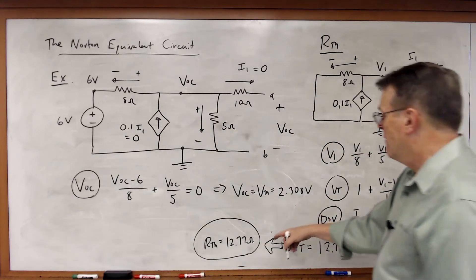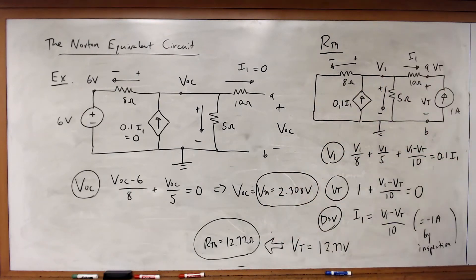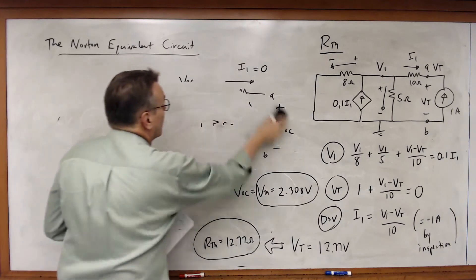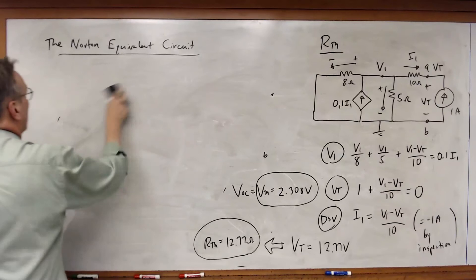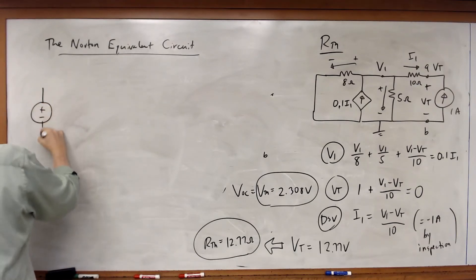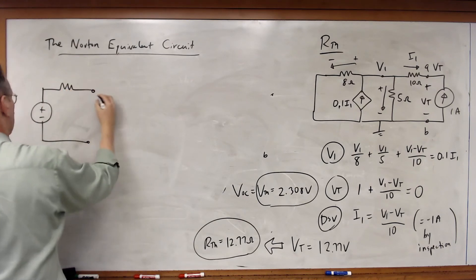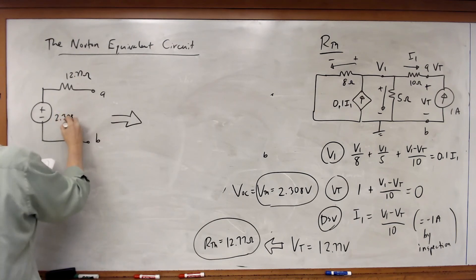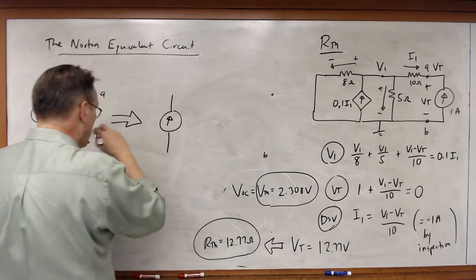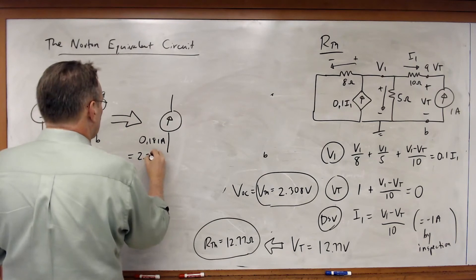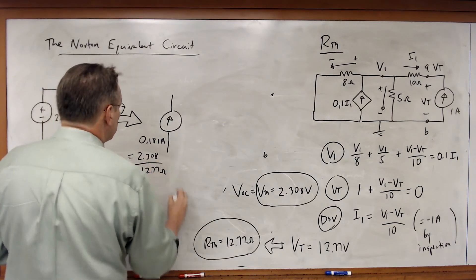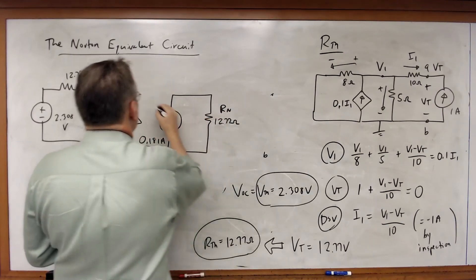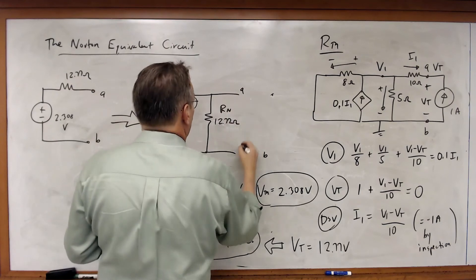So there's my Thevenin equivalent resistance of 12.77 ohms and Thevenin equivalent voltage of 2.308 volts — that's my Thevenin equivalent circuit. Now I just do source transformation. So I go from 12.77 ohms in series with 2.308 volts to a Norton current of 0.181 amps — which is just 2.308 divided by 12.77 ohms — in parallel with the same resistance, 12.77 ohms. That's R_N and that's I_N. There's my solution.